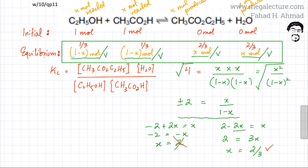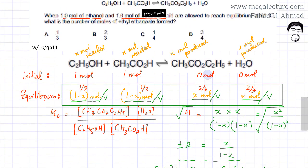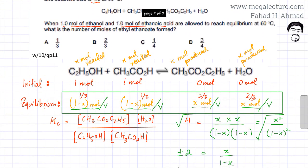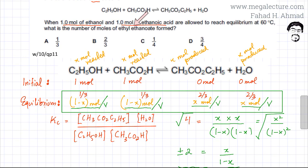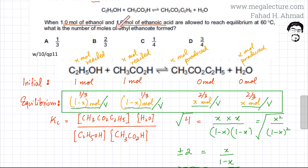We've found the value of x and substituted it into the equilibrium moles. The question asks for the number of moles of ethyl ethanoate formed. Initially there were zero moles, and at equilibrium there are 2/3 moles. So the correct answer is option B.